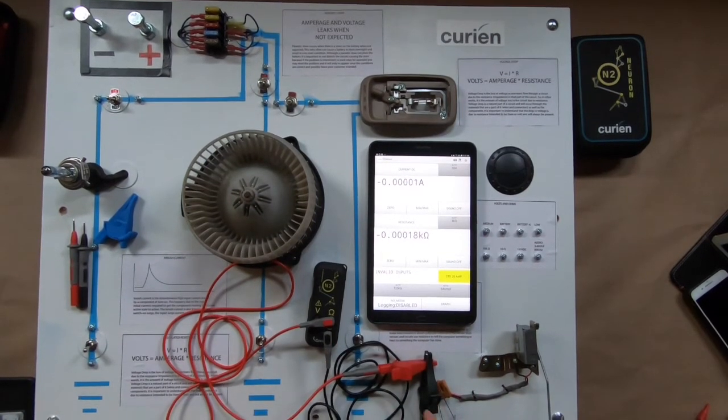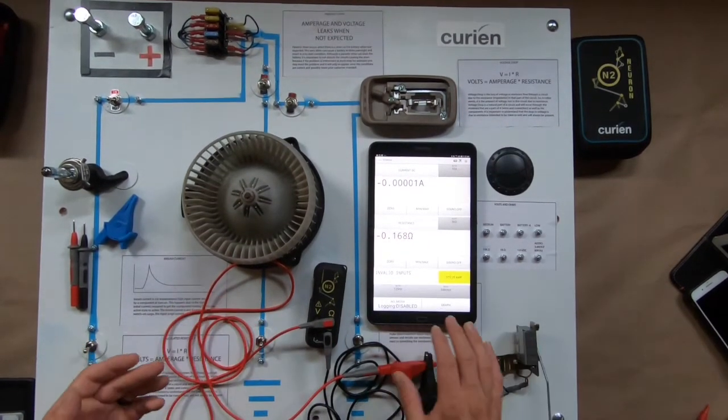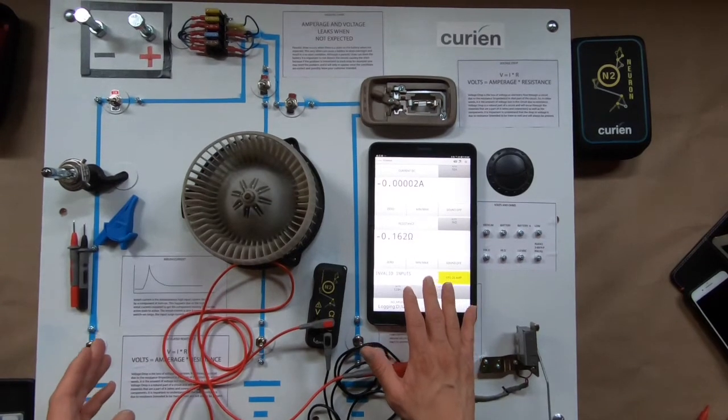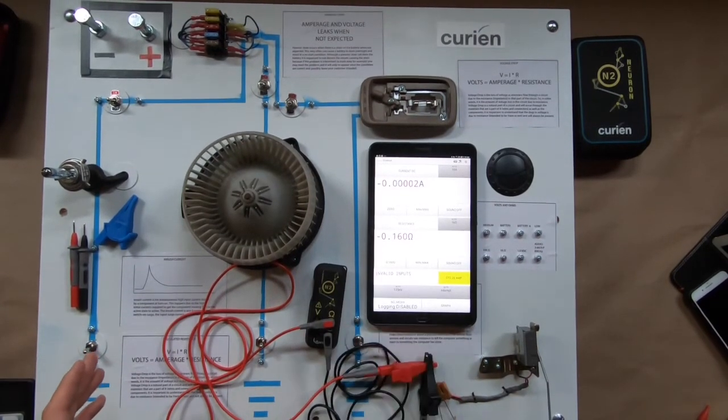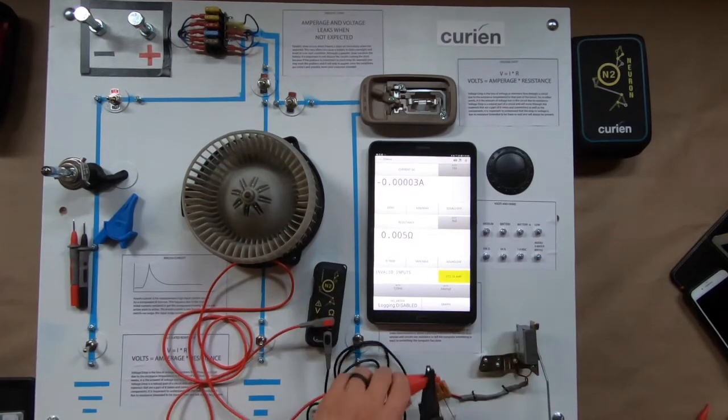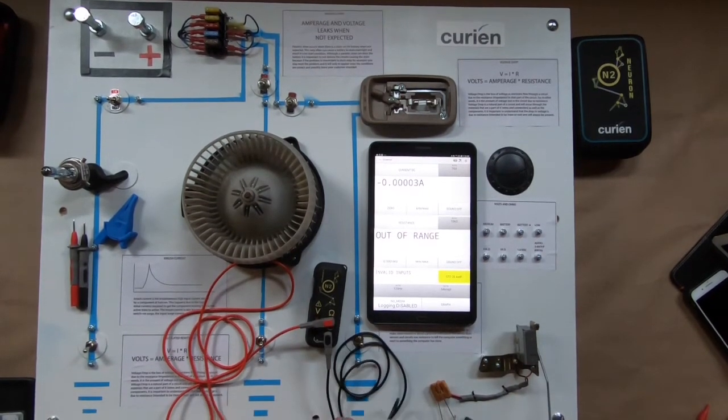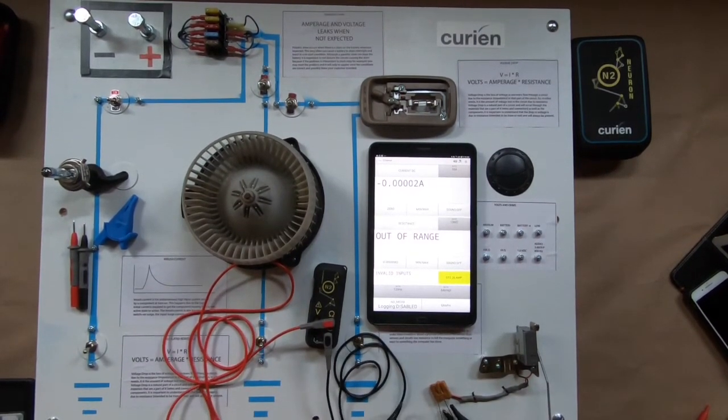So, in this case, when I connect those, notice there's a bit of a reading there. Once it stabilizes, give it a second. I'm going to go ahead and tap the zeroing there, so that way we can get one of the more accurate readings possible.